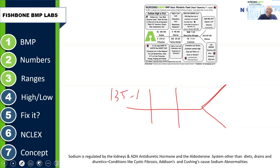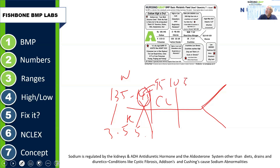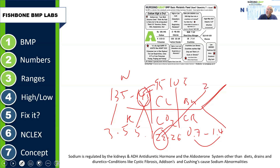Quick recap of the numbers: sodium is 135 to 145 — the only one to truly memorize. Potassium: 3.5 to 5.1. Chloride: add 4 and 5, get 9, go to 10 — 95 to 105. CO2: three 2s add to 6 — 22 to 26. Creatinine: create the world in 7 days — 0.7 to 1.4. BUN: 7 to 22. Glucose: 60 to 120. Those are your basic BMP lab value ranges.